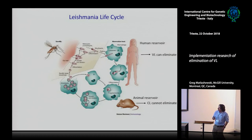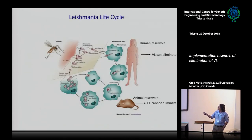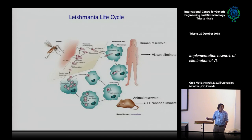With visceral leishmaniasis, humans are the only reservoir, so it's easier to find people who are sick, treat them, stop the transmission, and try to eliminate the disease. But in cutaneous leishmaniasis, where you have animal reservoirs — rodents, hyrax, dogs — it's almost impossible. There's no way you're going to get rid of the animal reservoir. Developing an elimination program for CL will be very difficult unless you have a vaccine or a similar approach.